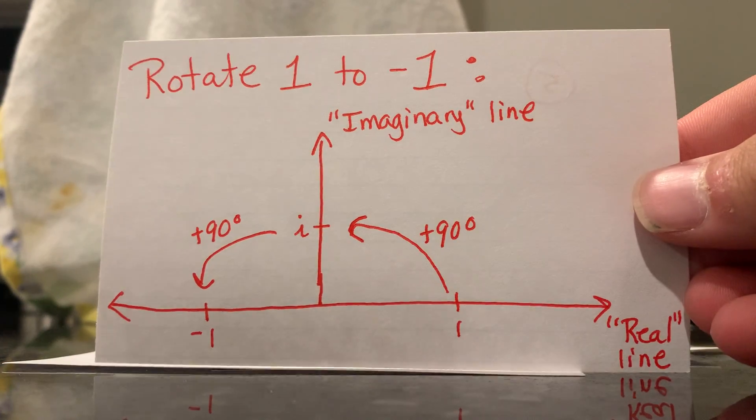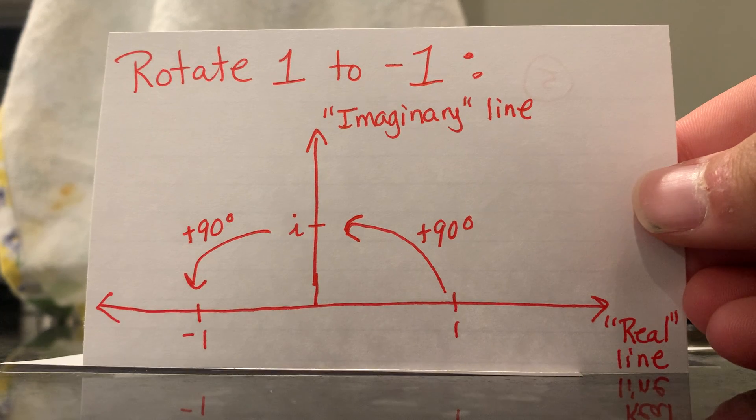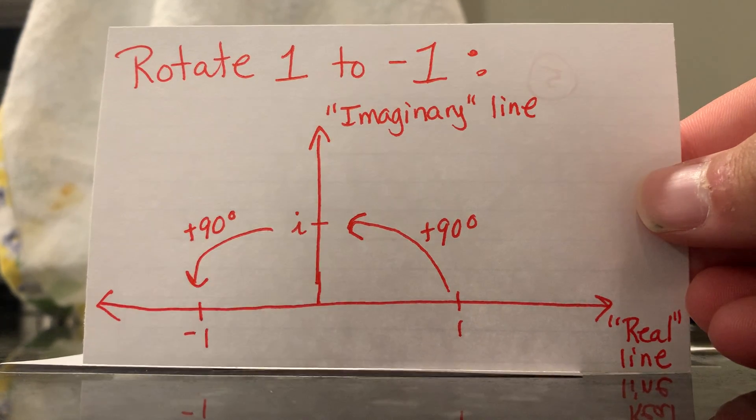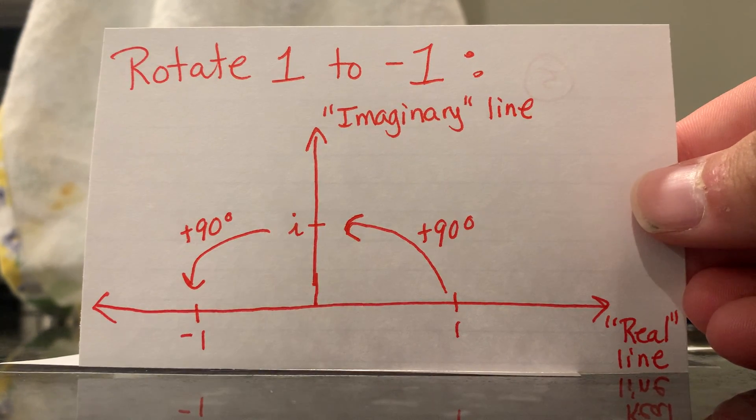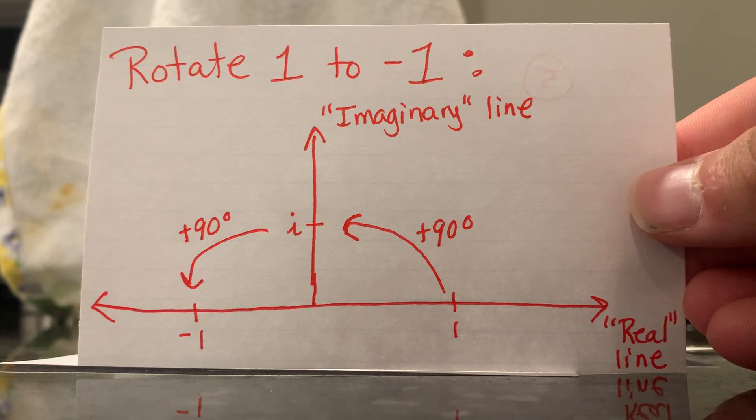We can't multiply by a negative one, but if we imagine x being a rotation of 90 degrees, then applying twice will be a 180-degree rotation, or a flip from one to negative one.